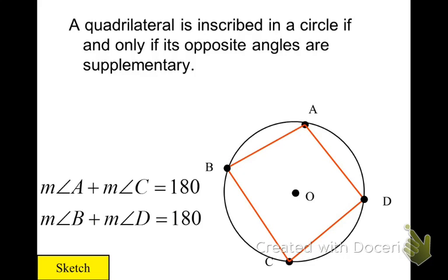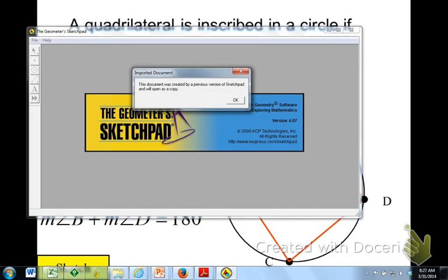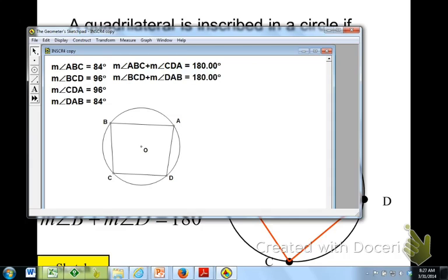This is the quadrilateral inscribed where the opposite angles are supplementary. And why is that? Well, because angle A has part of the circle, angle C has the other part. Together, they add up to 180.